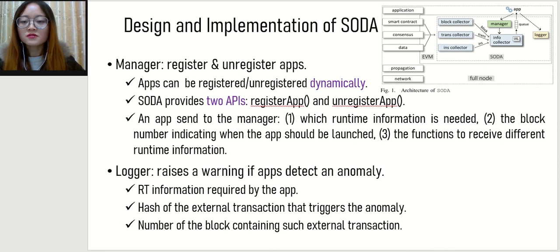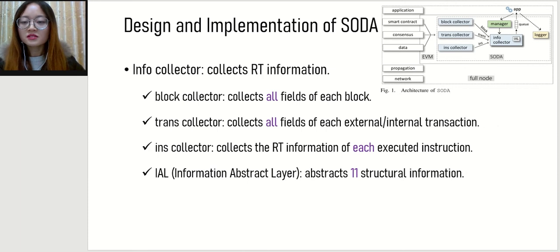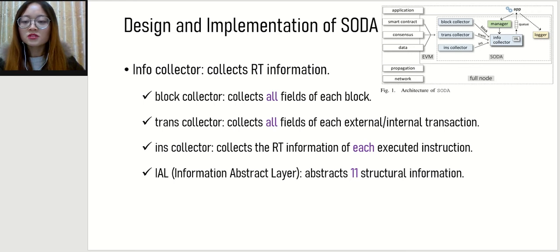The Manager is responsible for registering and unregistering apps. When registering, an app sends required information to the Manager. The Logger releases a warning if apps detect an anomaly, which can facilitate anomaly investigation and smart contract debugging. The Info Connector connects runtime information and consists of four sub-modules: Block Connector connects info of each block; Trans Connector connects info of each external or internal transaction; Ins Connector connects runtime information of each executed instruction; and IAL (Information Abstract Layer) abstracts 11 structural information.